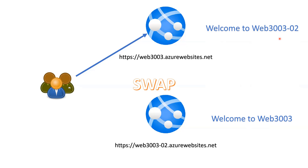By swapping the deployment slots, at the backend it points to the new content. Now when users try to access the same old URL — web3003.azurewebsites.net — they can see the new application or new content deployed in deployment slot 2. We can also swap it again if we make further changes. The best part is that if the new content has bugs or is not relevant, you can simply swap it back and users will return to the old content.